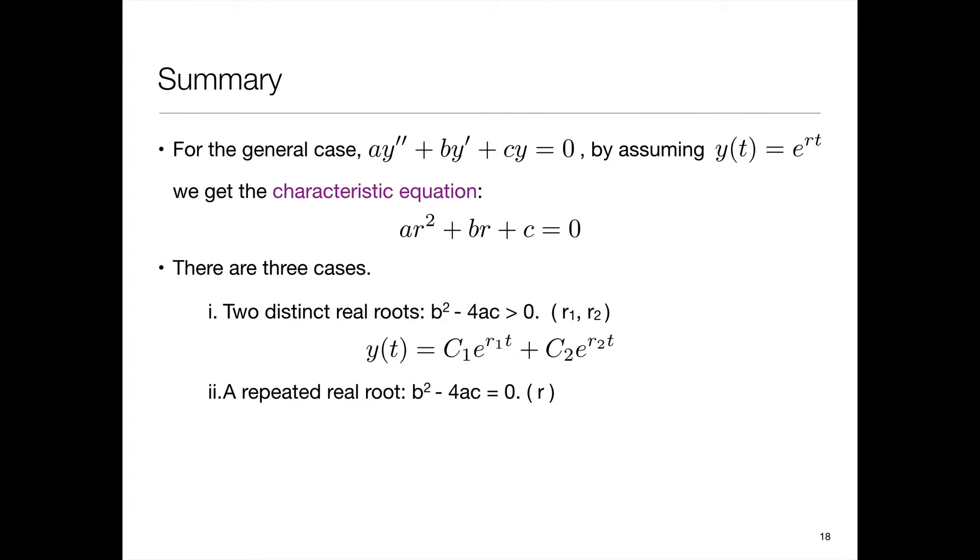The second case is when we have a repeated root, that is the discriminant in the quadratic formula is zero, and there we only have a single root, call it r.